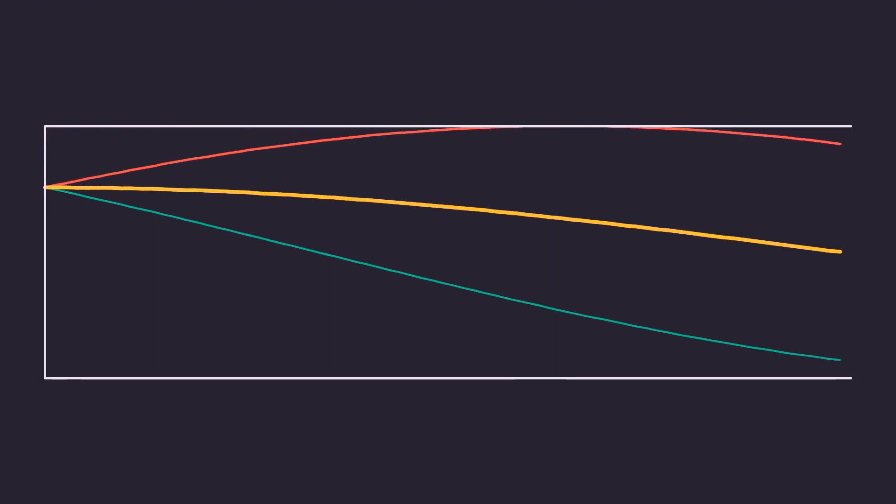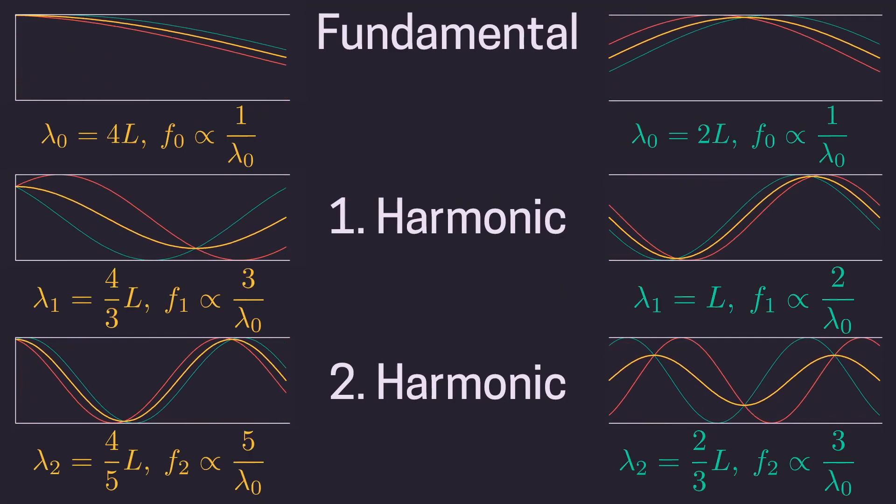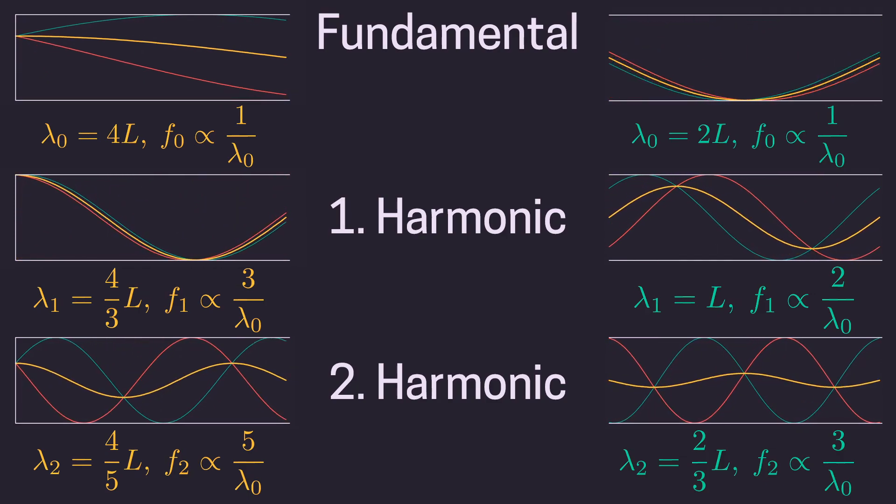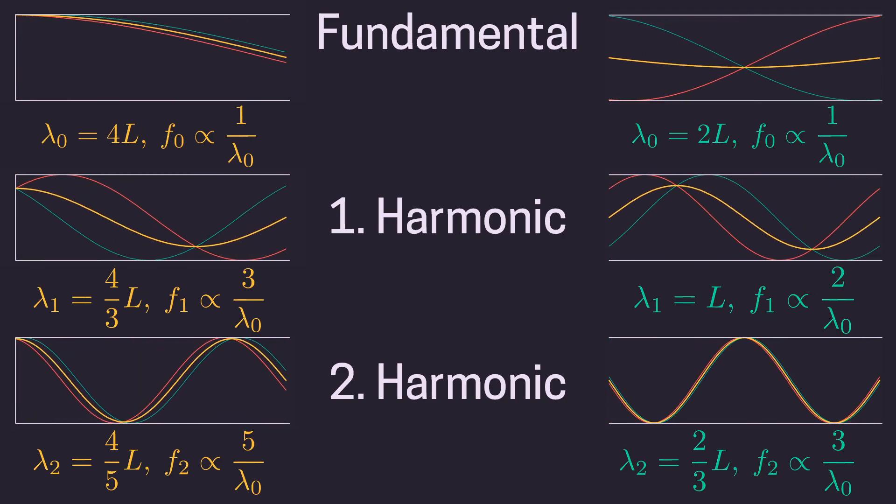Let's review our newly gained knowledge. Here are the first three harmonics of both pipes. For each pipe, we can calculate the wavelength of the standing wave and its relationship to the pipe length.